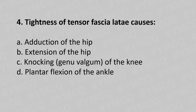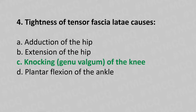Fourth question: tightness of the tensor fasciae latae causes — option A: adduction of the hip, option B: extension of the hip, option C: genu valgum (knocking of the knee), option D: plantar flexion of the ankle. The answer is option C: genu valgum, knocking of the knee.